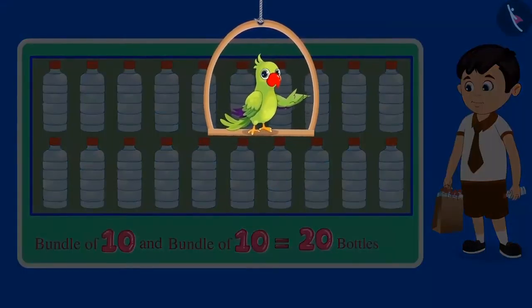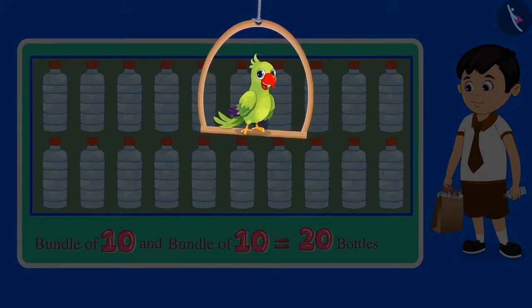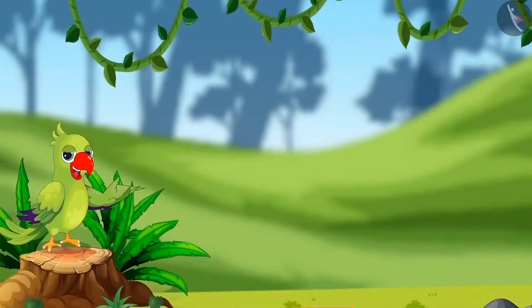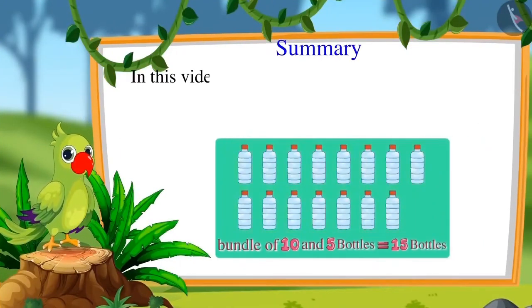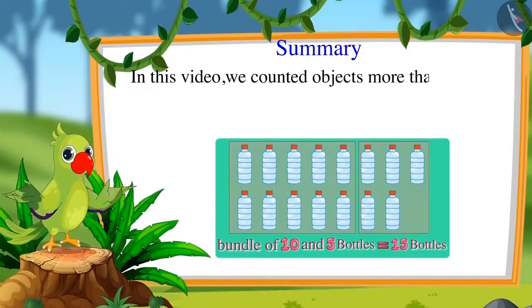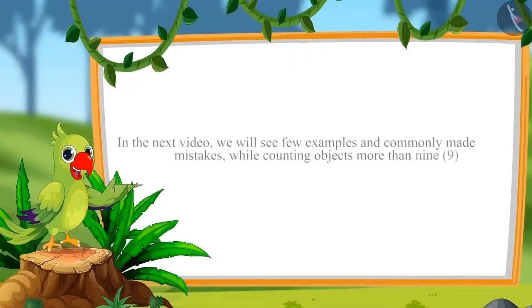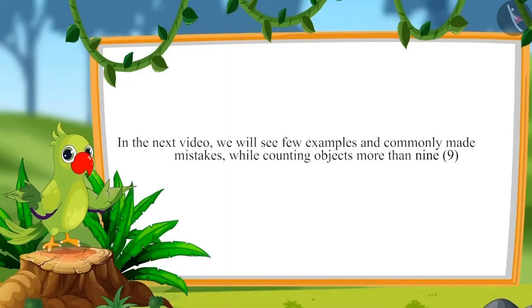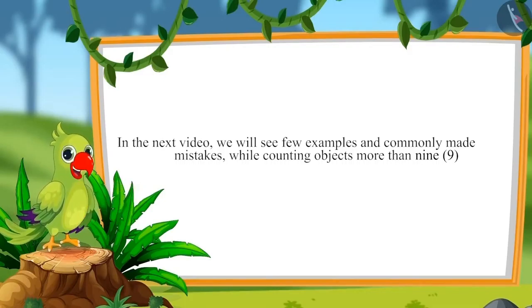Did you understand, children? Similarly, by making a bundle of 10, we can count till any number between 9 and 20. That was all for today. In this video, we counted objects more than 9 by making bundles of 10. In the next video, we will see a few more examples and the commonly made mistakes that should be avoided while counting objects more than 9. Till then, bye friends!